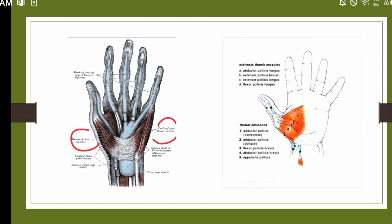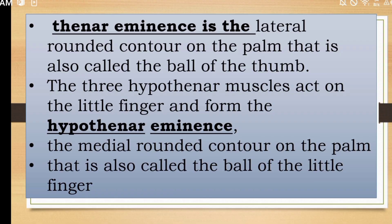Thenar eminence is the ball of the thumb and hypothenar eminence is the ball of the little finger. Thenar eminence is the lateral rounded contour on the palm — also called the ball of the thumb. Hypothenar eminence is the medial rounded contour on the palm — also called the ball of the little finger.